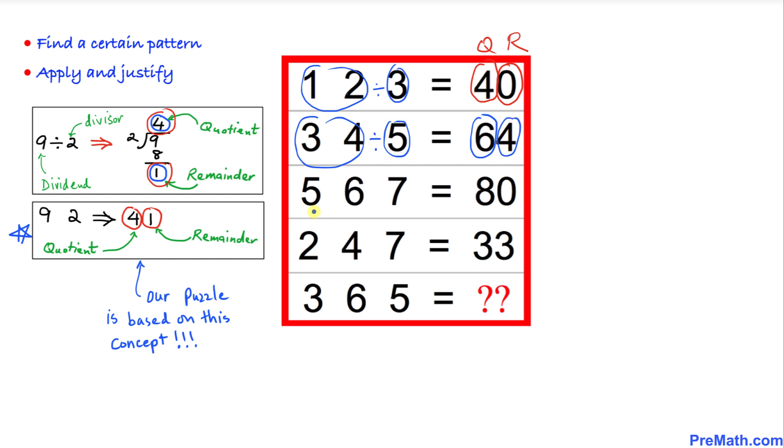And now next, 56 being divided by 7, so 8 is going to be our quotient and 0 is our remainder.